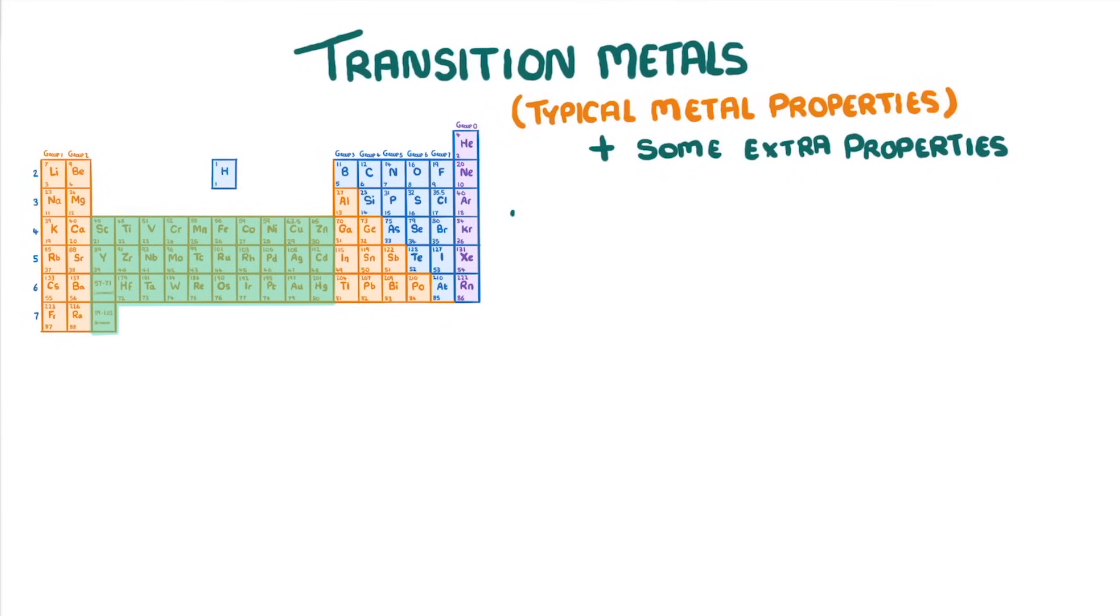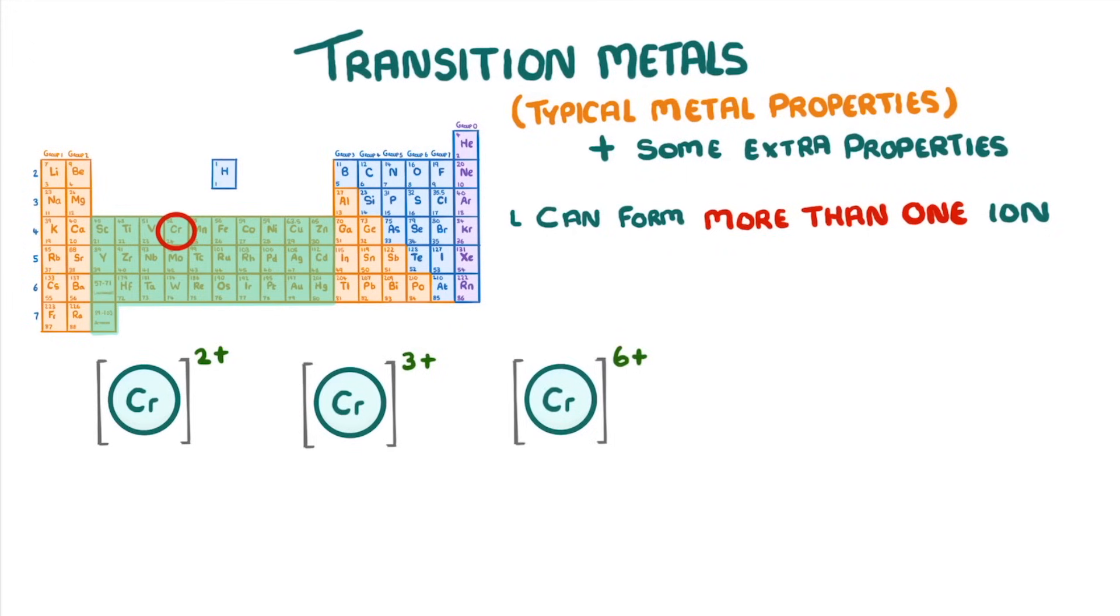One of these is that transition metals can form more than one ion. For example, chromium can form 2+, 3+, and 6+ ions. And these transition metal ions are often coloured. For example, the aqueous forms of these ones would be blue, green, and orange.